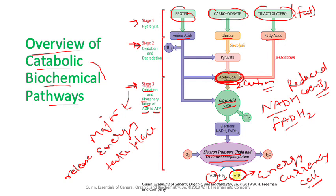These reduced coenzymes go into the electron transport chain for oxidative phosphorylation, where ADP gets a phosphate to convert into ATP — the energy currency of the cell. We're going to talk about each step separately: glycolysis, citric acid cycle, and electron transport chain.